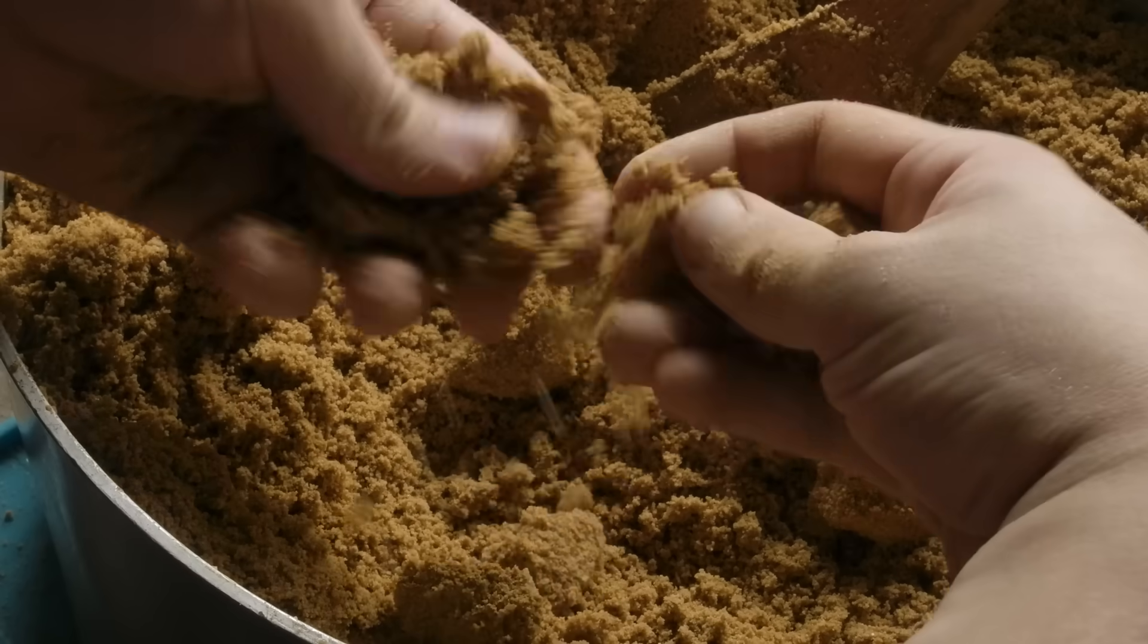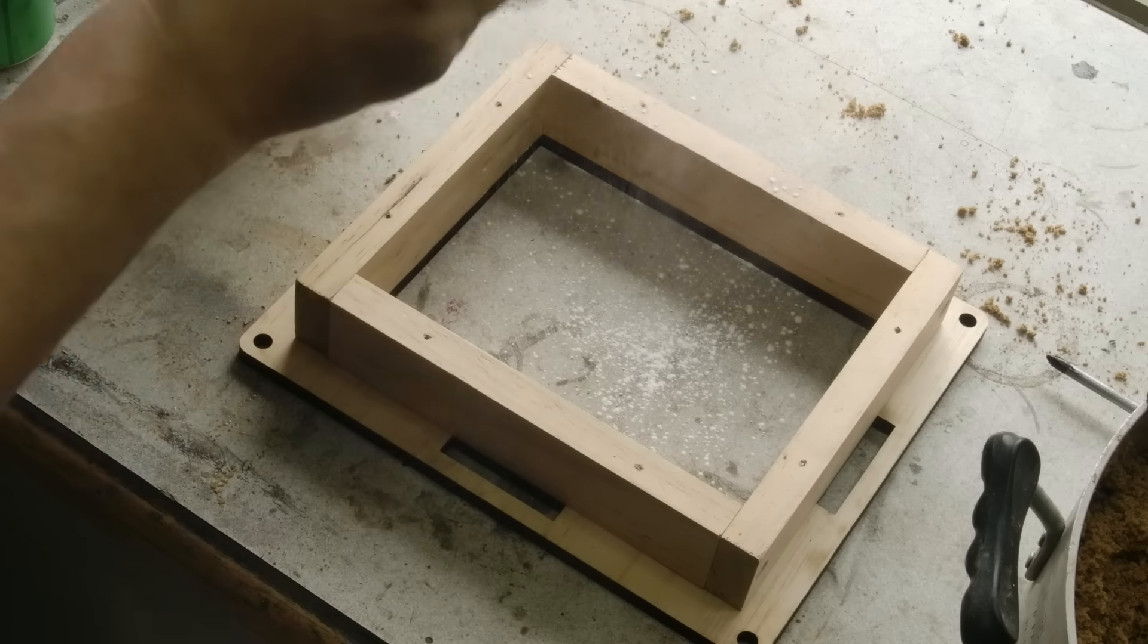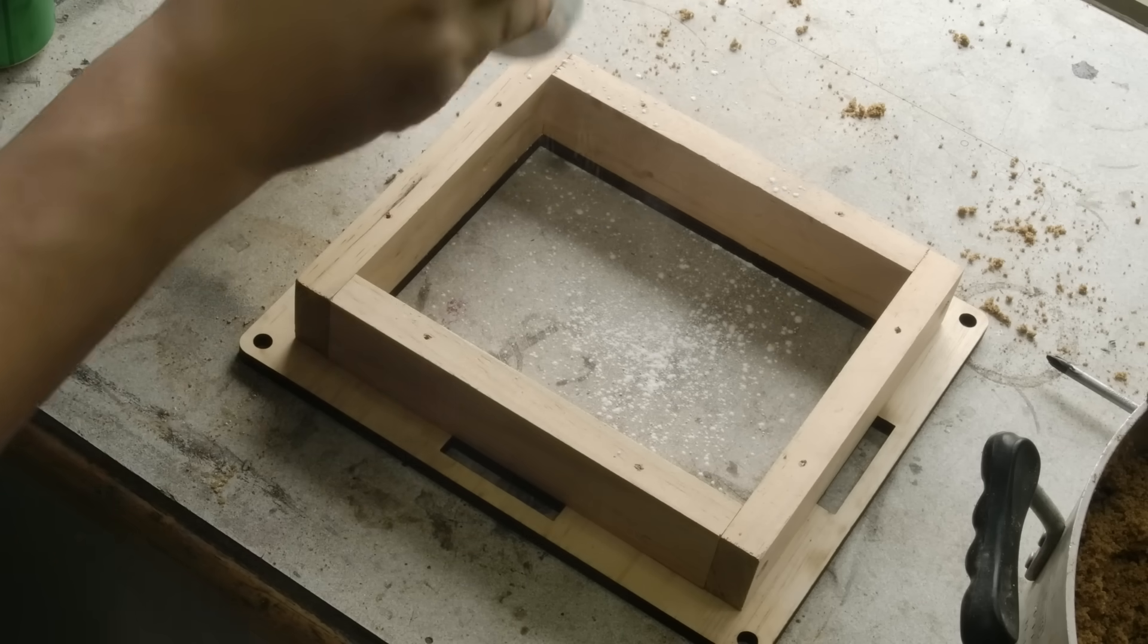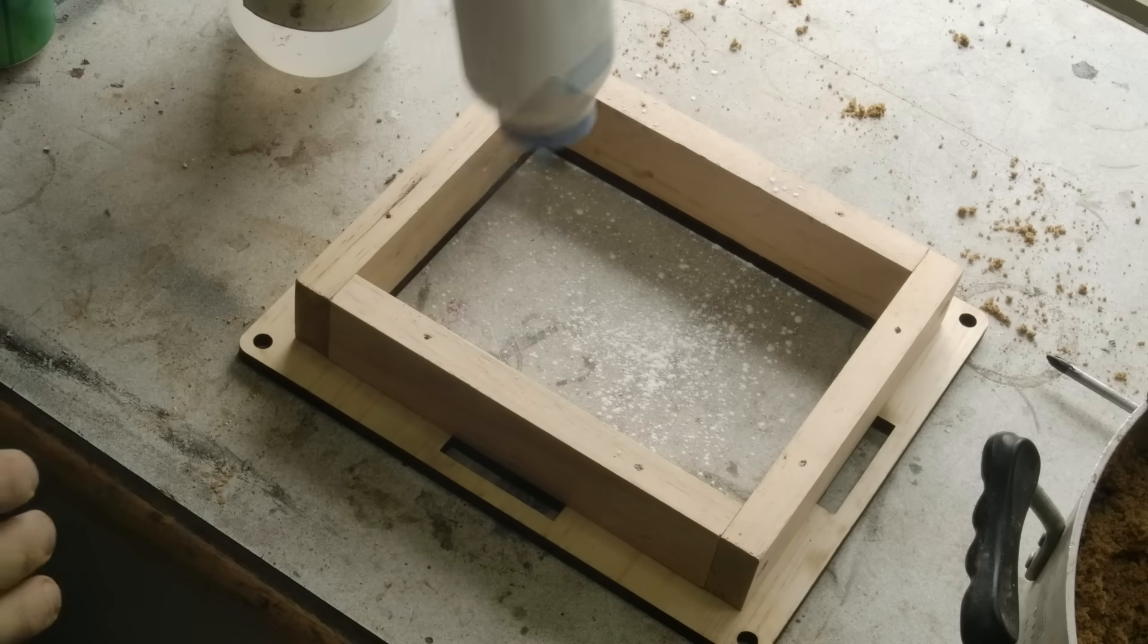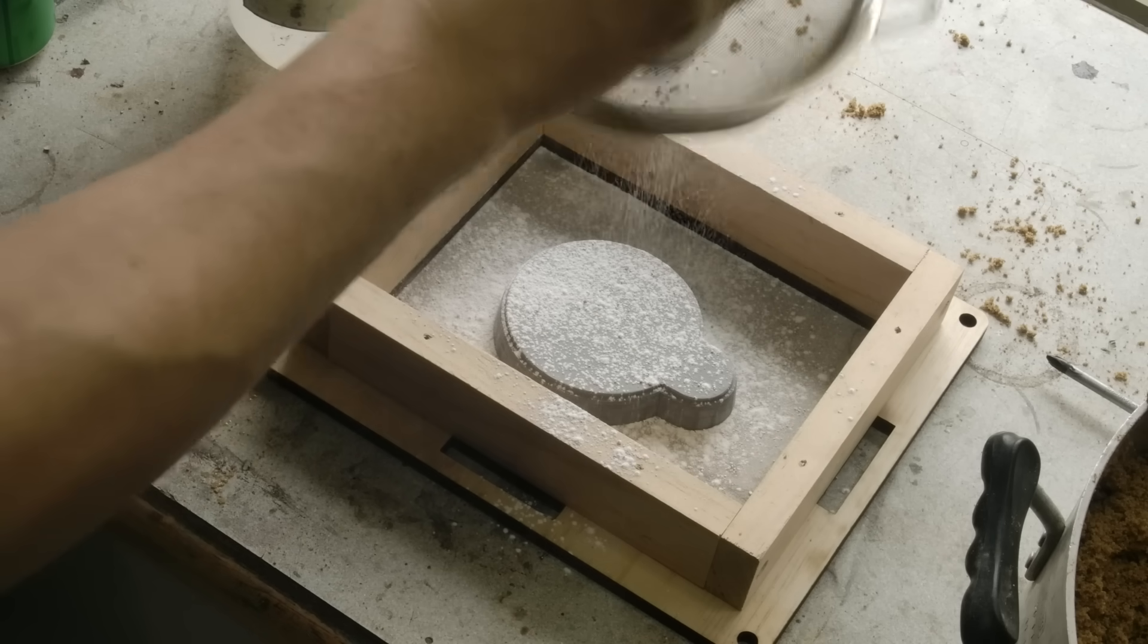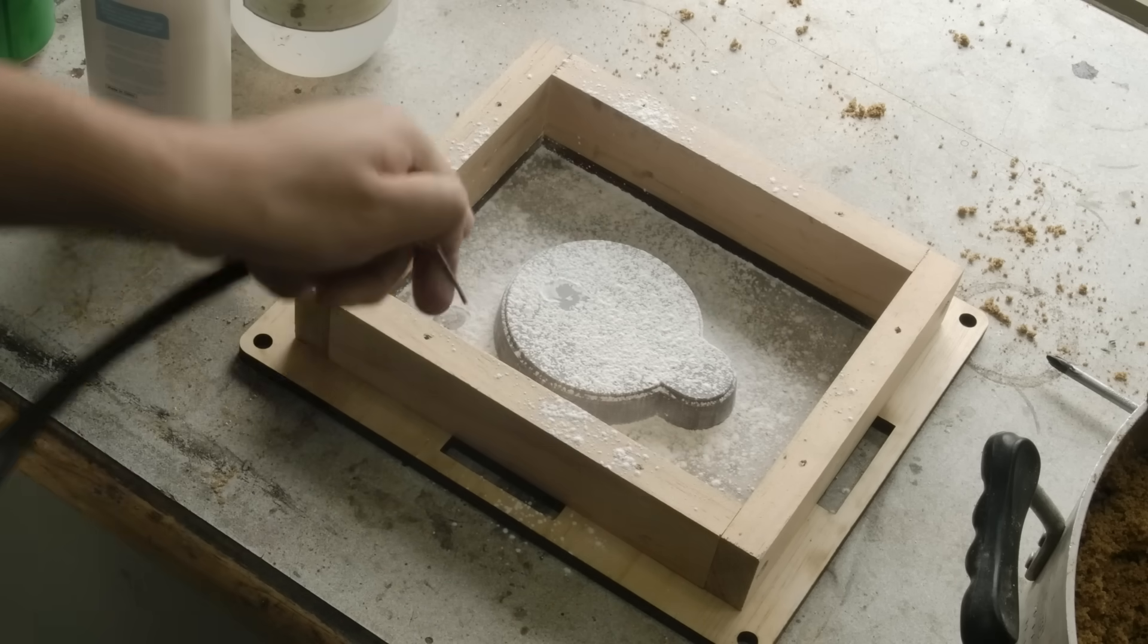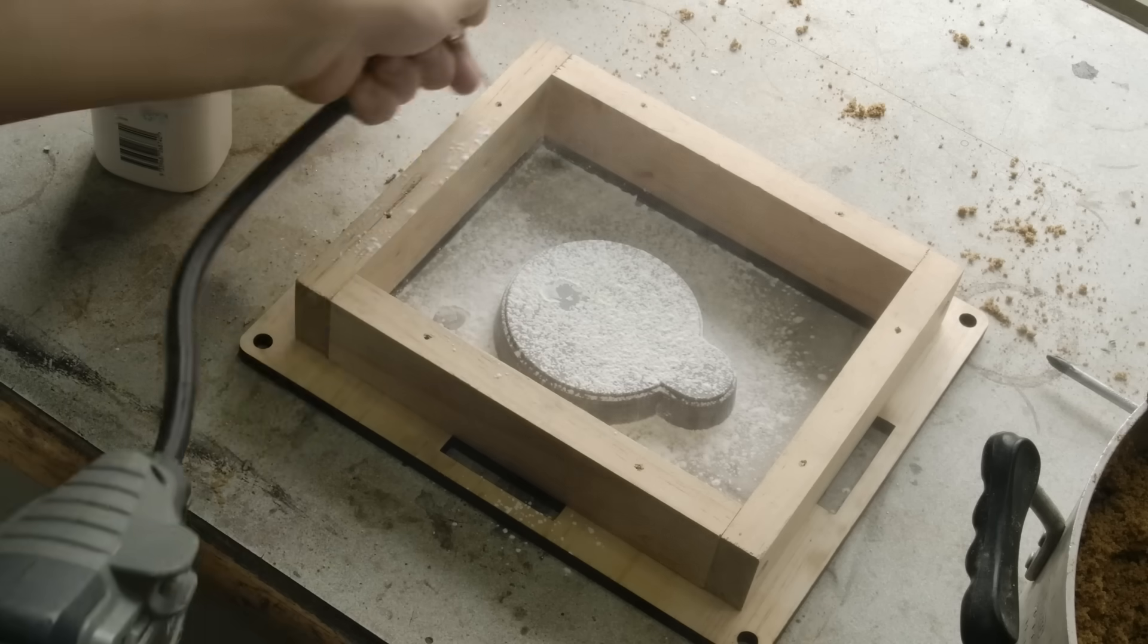At this point, the green sand is ready, and we can begin building the first mould. This starts with applying a layer of baby powder inside the flask, before placing the pattern and applying more powder. Baby powder is a common at-home mould release, to keep the sand from sticking to the pattern, or the other half of the mould.